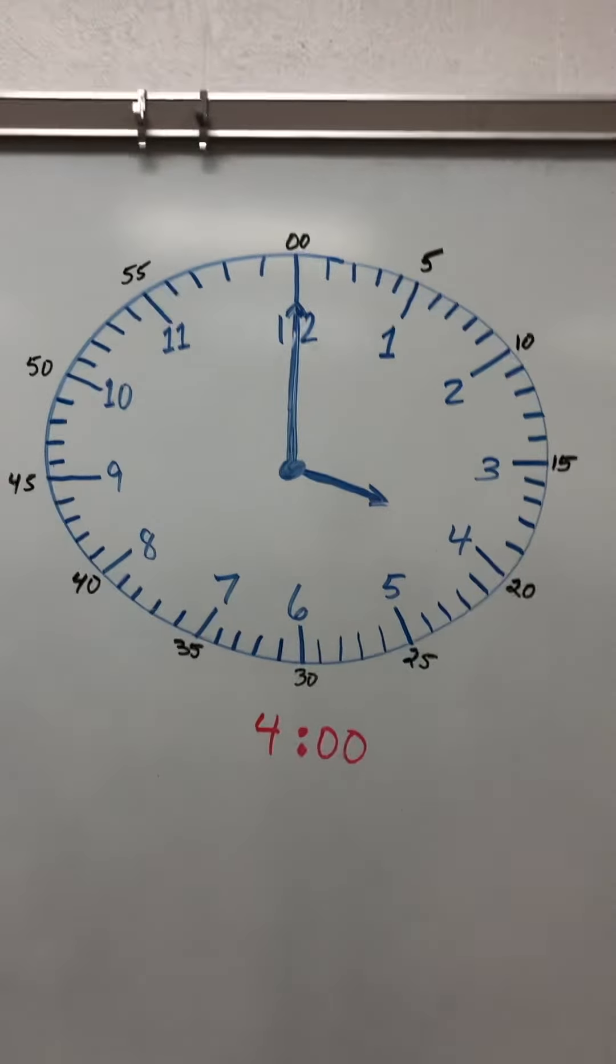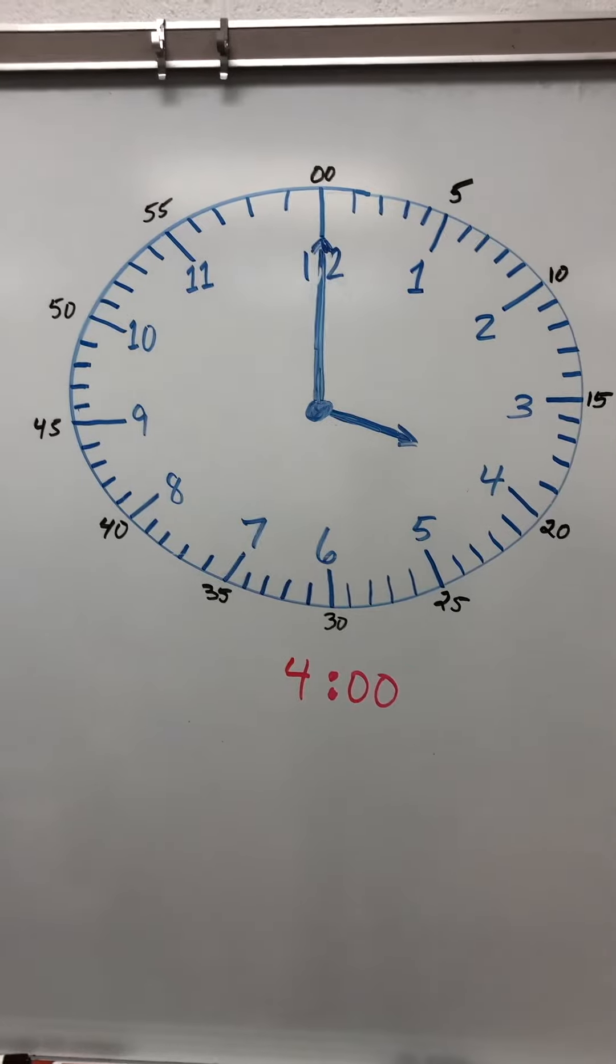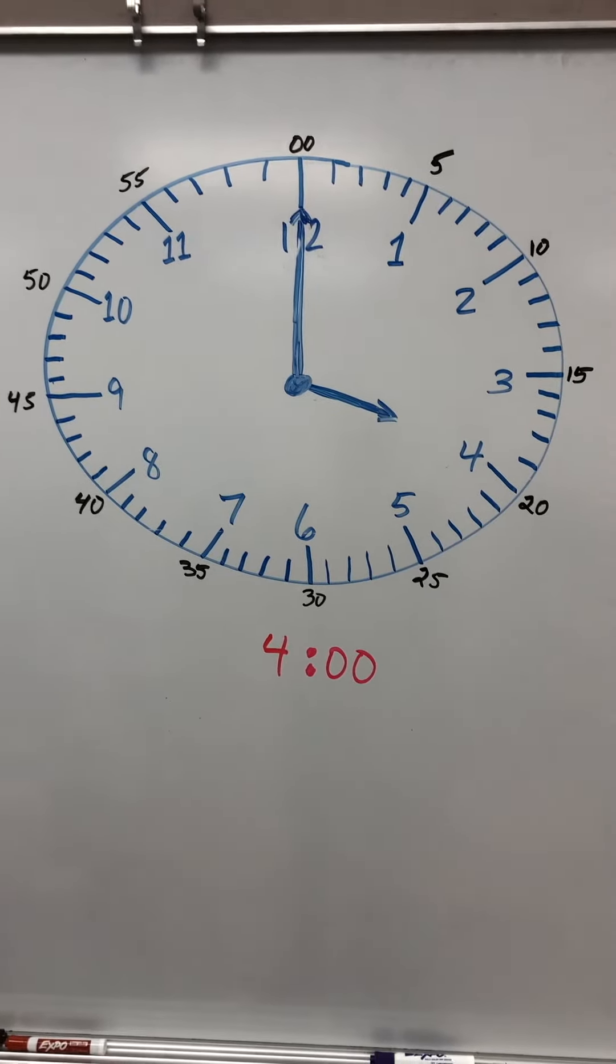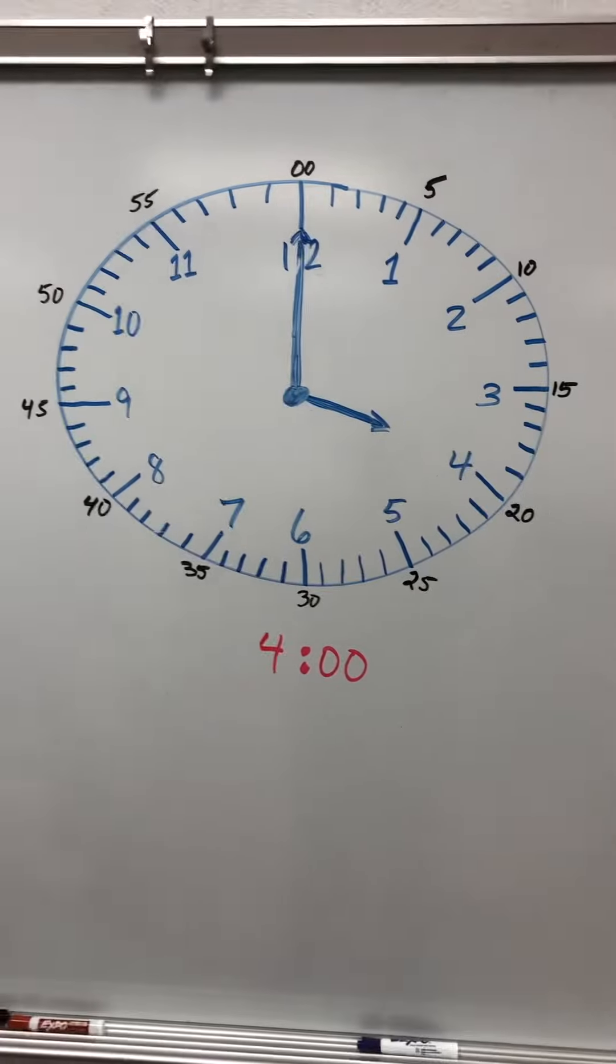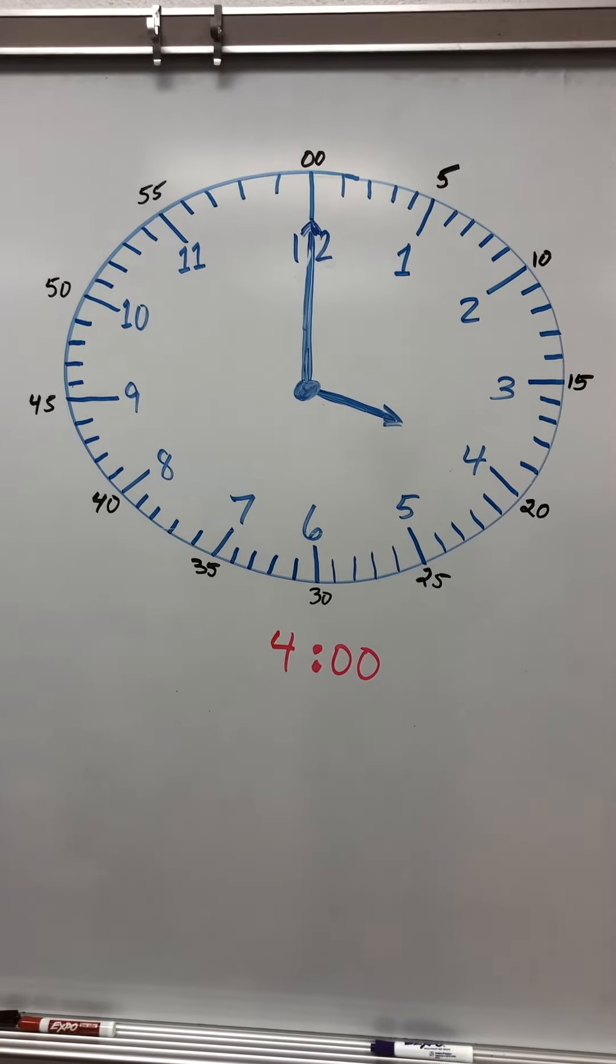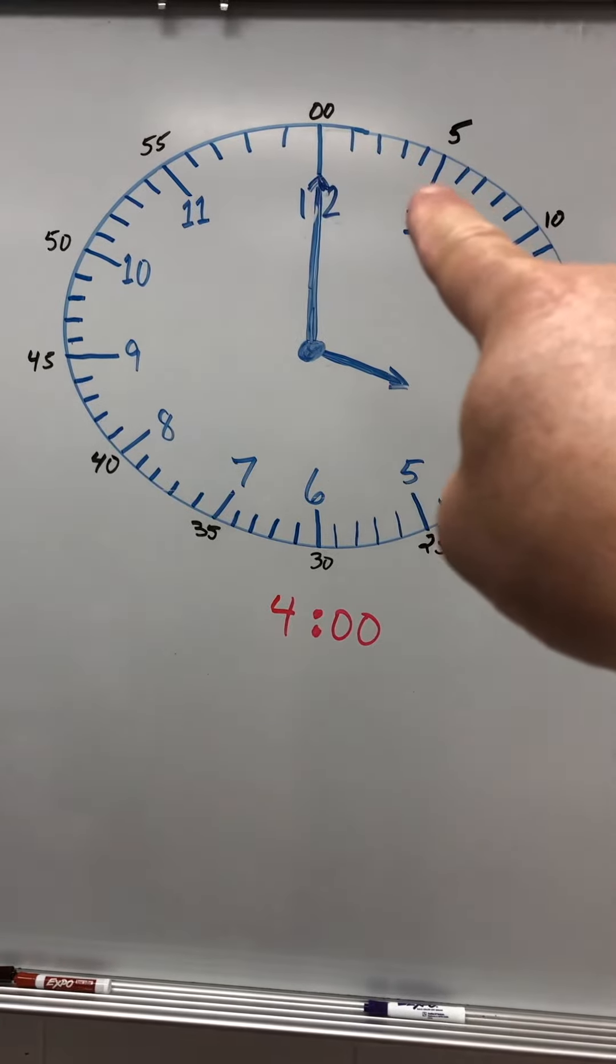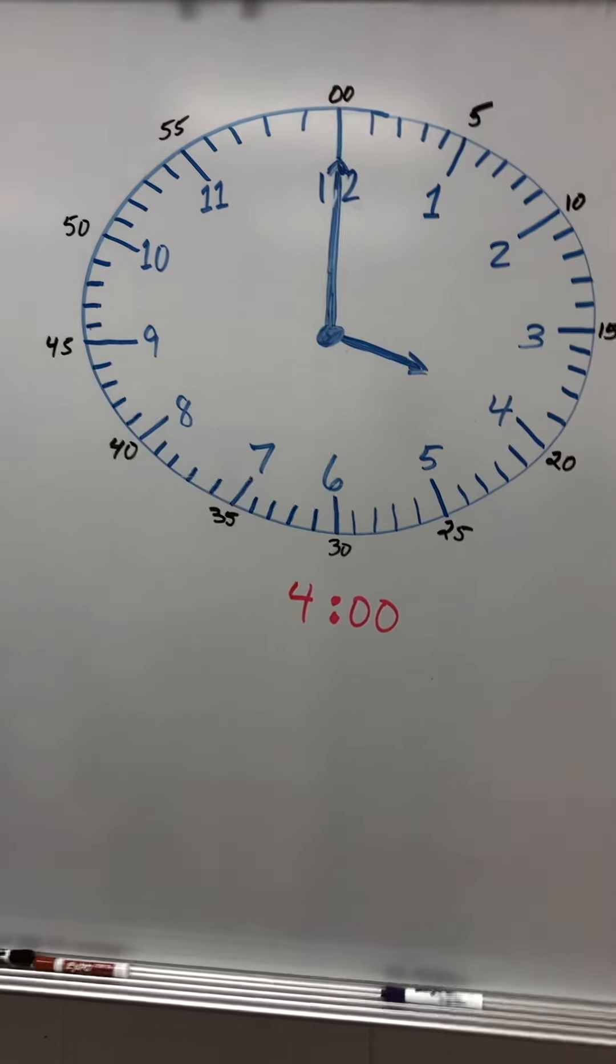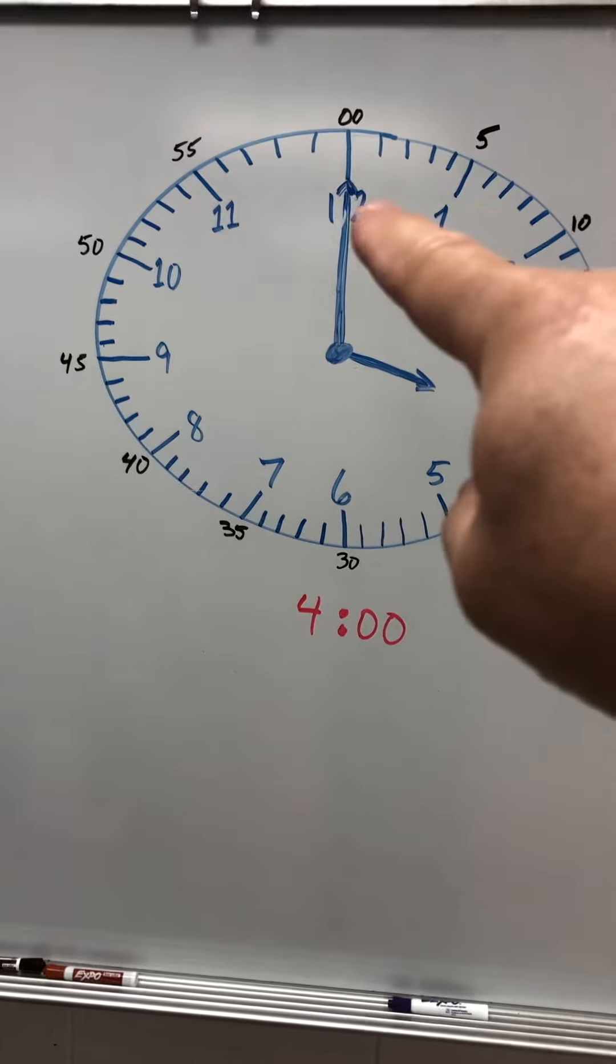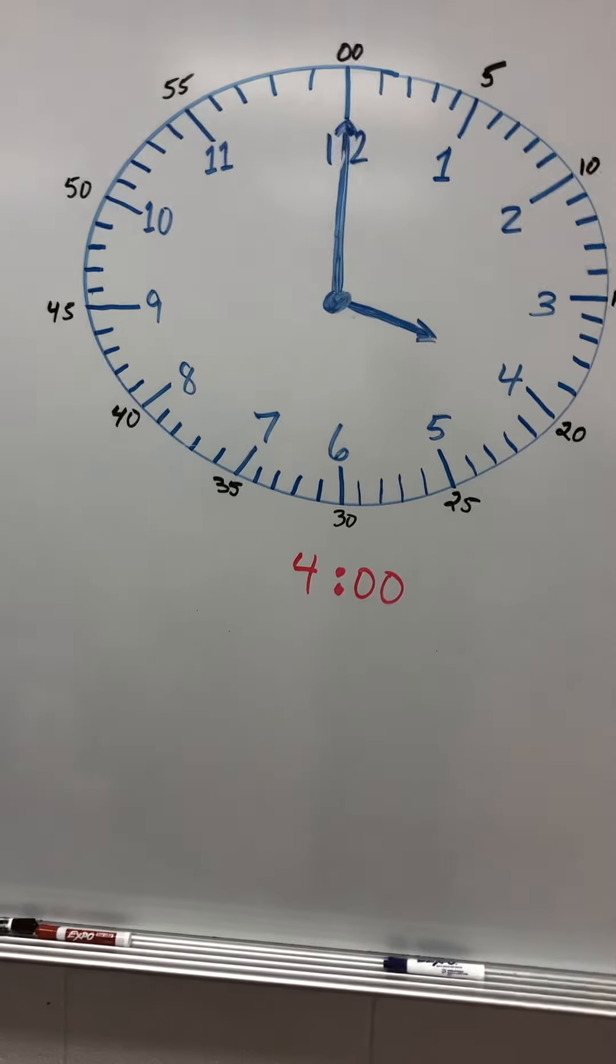So this time here represents four o'clock. The long hand is called the minute hand. One hour has 60 minutes. Each of the little dashes represents one minute, and this long hand travels minute by minute.